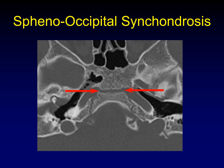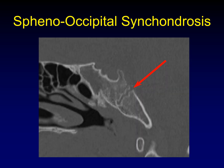The sphenooccipital synchondrosis occurs between the basi-sphenoid bone and the basi-occipital bone, and it marks the very center of the clivus. This synchondrosis completely fuses when people are in their early teens, and so adults no longer have this sphenooccipital synchondrosis. You'll see this in children exclusively, and you don't want to mistake it for a transverse-oriented fracture. It's usually easier to analyze in the sagittal plane, and here's its typical sagittal appearance, dividing the clivus in half.